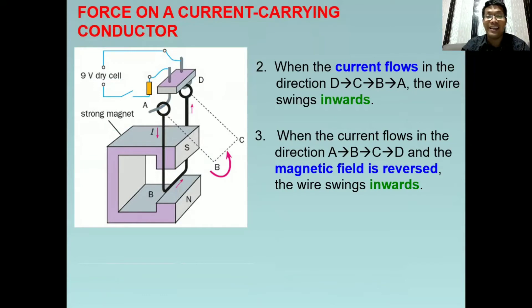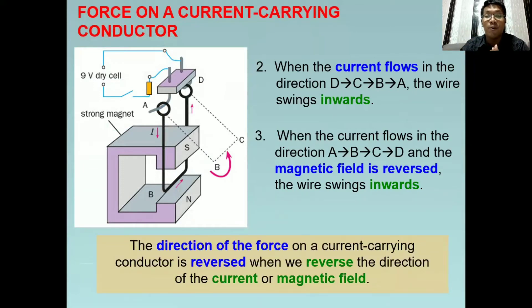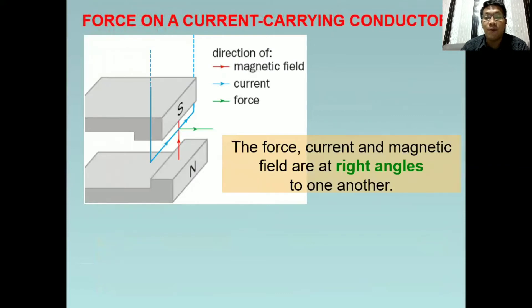So what's the point in here? The direction of the force on a current carrying conductor is reversed when we reverse the direction of any of this: the current or magnetic field. Pag pinalitan natin ang direction ng current, magbabago ang direction ng force. Pag pinalitan natin ang direction ng magnetic field, ganun din, magbabago din ang direction ng force. Tatandaan ang konseptong ito. So for this scenario, the force, current, and magnetic field are at right angles to one another.